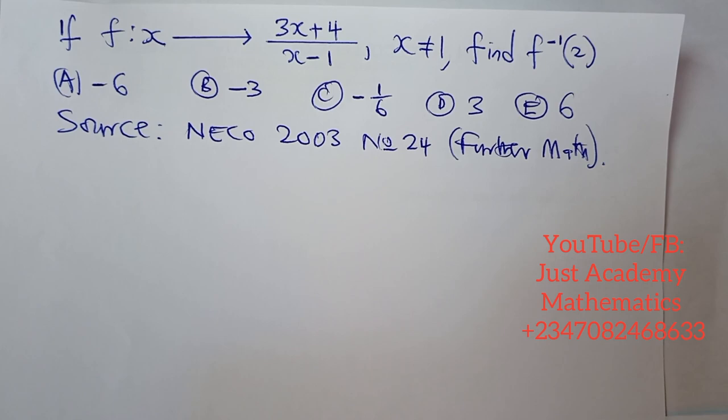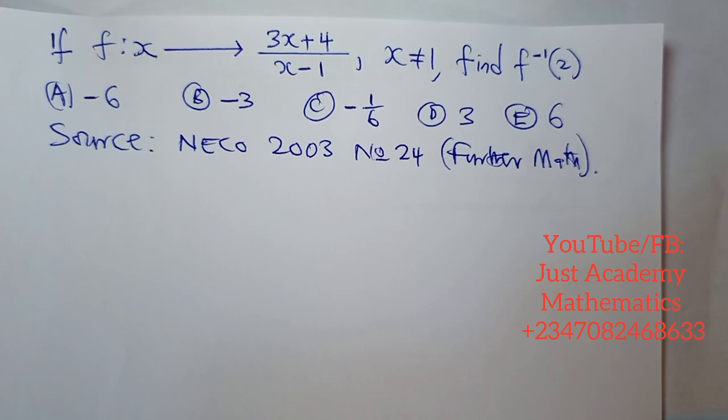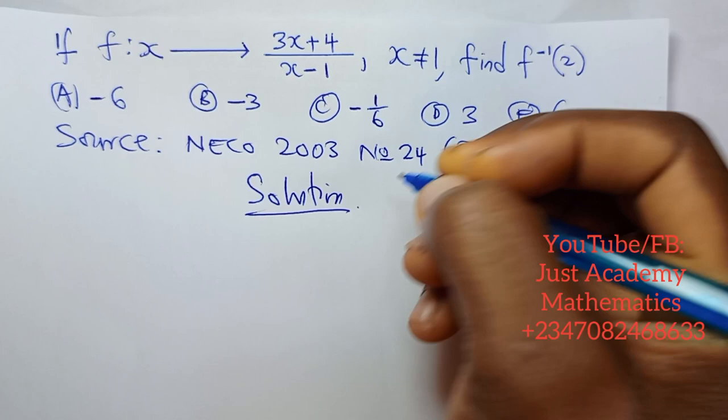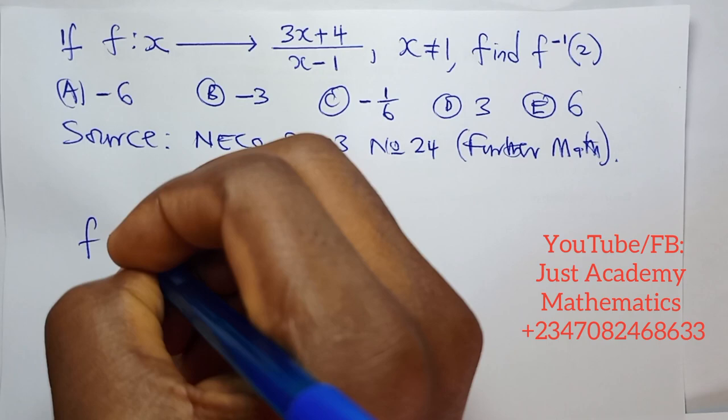The function is x not equal to 1, and we should find f inverse of 2. The solution is that first we need to find the inverse of f(x) before we can find the inverse of 2.